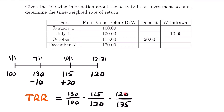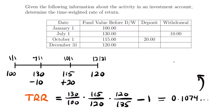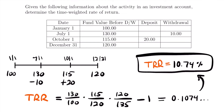Now we are done compounding the returns for this investment account, because our last fraction involved the balance at the end of the year. We subtract 1, and the equation for calculating the time-weighted rate of return is complete. Plugging all this into our calculator by multiplying the fractions together and subtracting 1, we find that the time-weighted rate of return is 10.74%. That is the time-weighted rate of return and the solution to this problem.